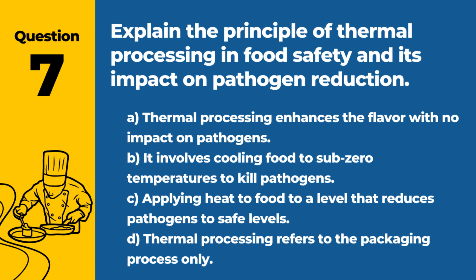Question 7. Explain the principle of thermal processing in food safety and its impact on pathogen reduction. a. Thermal processing enhances the flavor with no impact on pathogens. b. It involves cooling food to subzero temperatures to kill pathogens. c. Applying heat to food to a level that reduces pathogens to safe levels. d. Thermal processing refers to the packaging process only. Answer: c. Applying heat to food to a level that reduces pathogens to safe levels. Thermal processing is a critical method for ensuring the microbial safety of food.